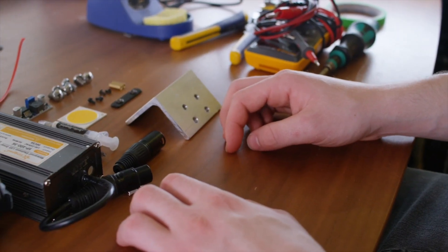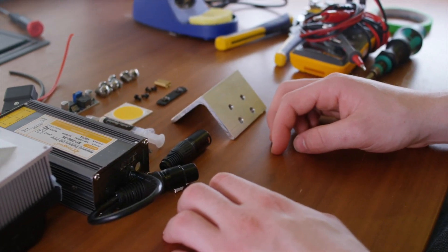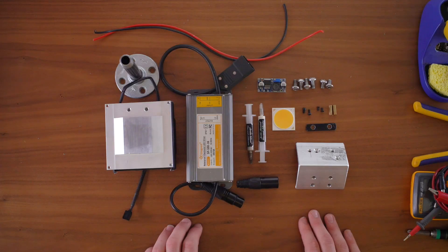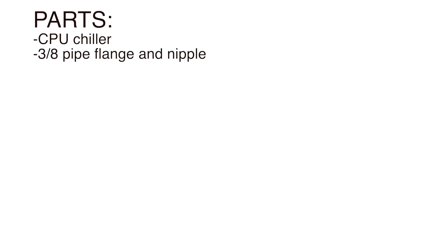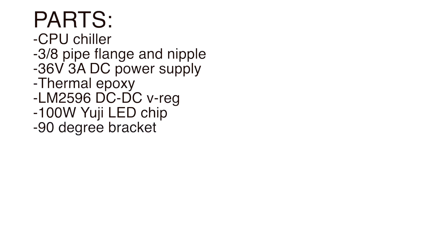Hi, it's Riley with The Garage Learning, and today we're going to be building an LED hard light. We're going to be using the LED COB kit, which includes a CPU chiller, a flange, a power supply, some thermal epoxy, a voltage step down, an LED chip, a bracket, a milled out slot nut, some screws, and some wires.